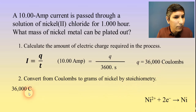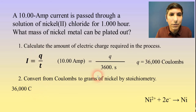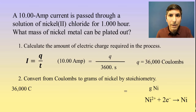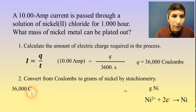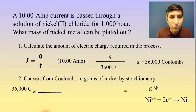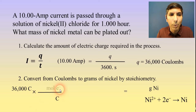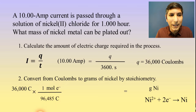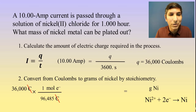The question asks for mass of nickel, so grams of nickel will be at the end. The first step is to convert to moles — in this case, moles of electrons — using Faraday's constant. Coulombs go on the bottom to cancel out and moles of electrons go on top. Faraday's constant tells us one mole of electrons equals 96,485 Coulombs, so Coulombs cancel and we're now in moles of electrons.